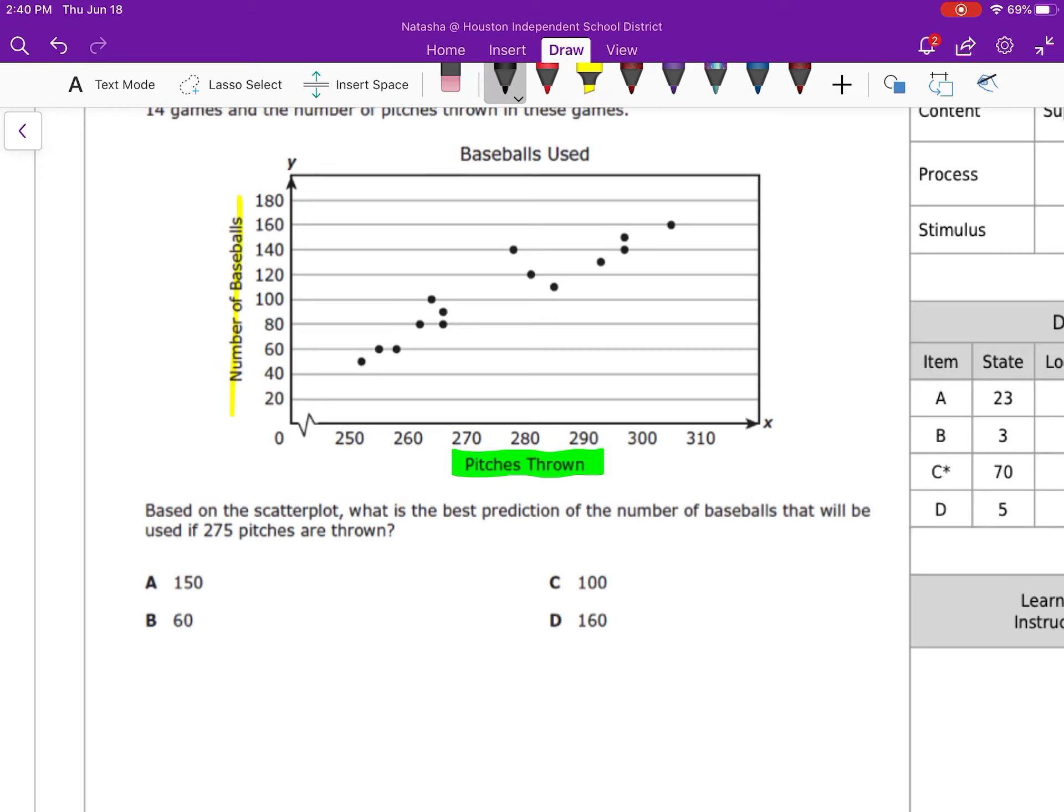So then it says, based on the scatterplot, what is the best prediction of the number of baseballs if there are 275 pitches thrown?